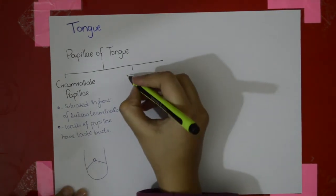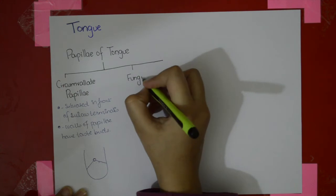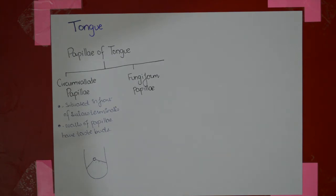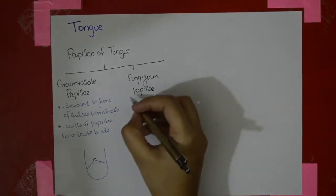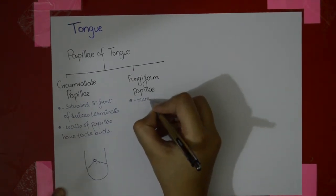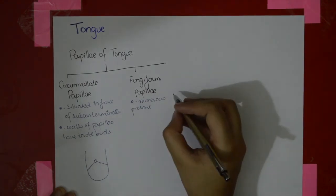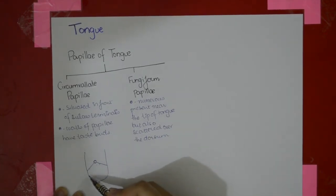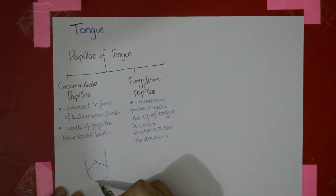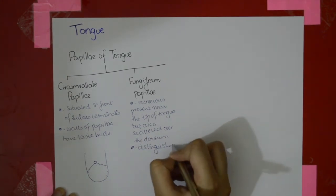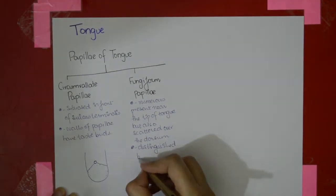The next important papillae are the fungiform papillae. In size, the fungiform papillae are smaller than the circumvallate papillae. They are numerous and are present near the tip of the tongue. As you can see in the diagram, the fungiform papillae are present at the tip and are also scattered over the dorsum. They are distinguished by their bright red color.